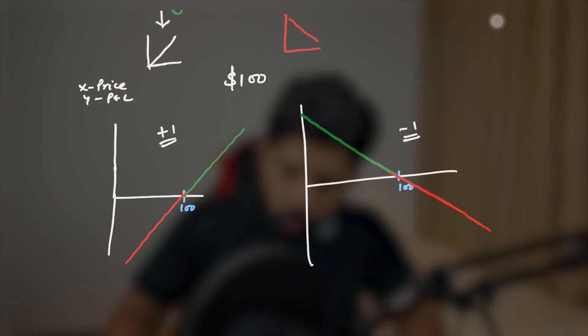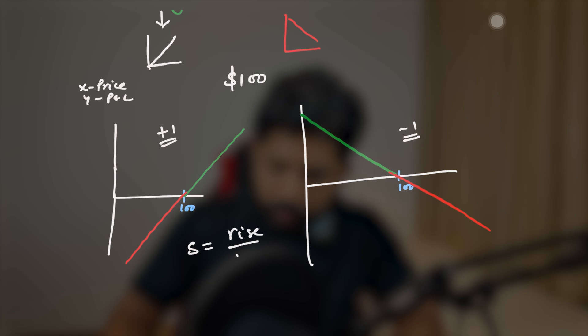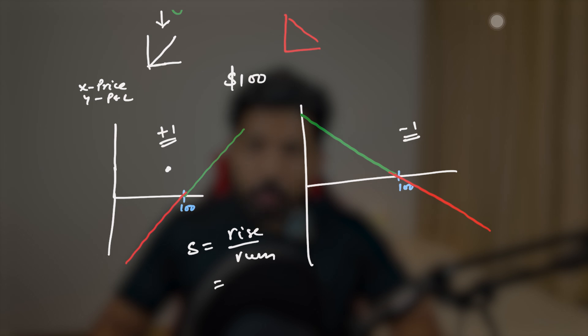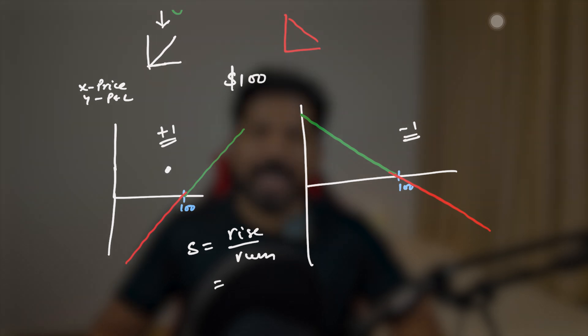Why? Because we know that slope equals rise over run. So it will be always positive for a long and always negative for a short. We can say that when you bet on the increase of the price, it is a long, and when you bet on the decrease of the price, it is a short.